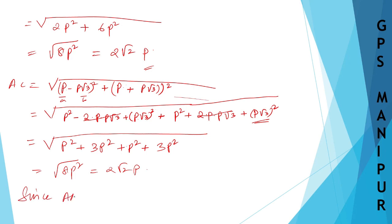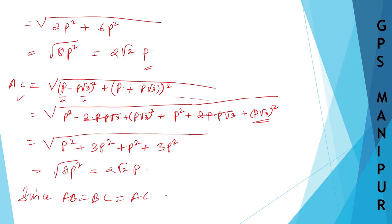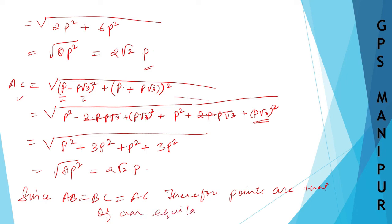Since AB = BC = AC = 2√2P, all three sides are equal. Therefore the given points are the vertices of an equilateral triangle. That's all — I hope you understood. Thank you so much, we will meet in the next video.